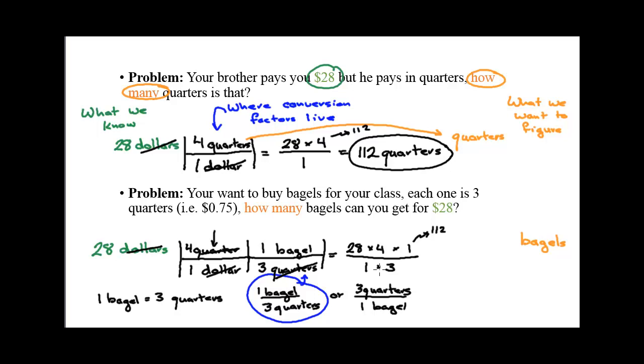When you hit enter, you're going to get what I call a calculator answer. 37.33333. Lots of 3's. 37.333333 bagels.